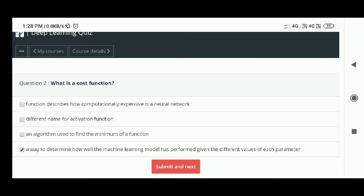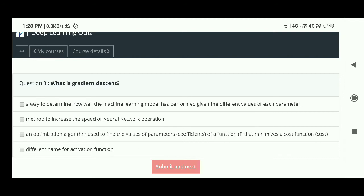Third question: What is gradient descent? The answer is - an optimization algorithm used to find the values of the parameters. That's option C.